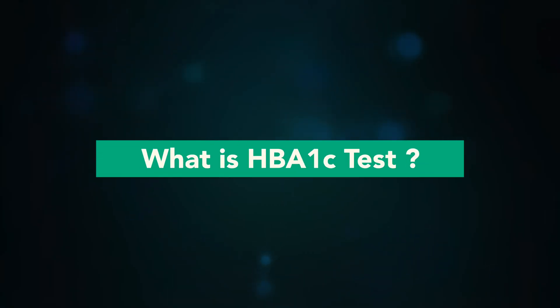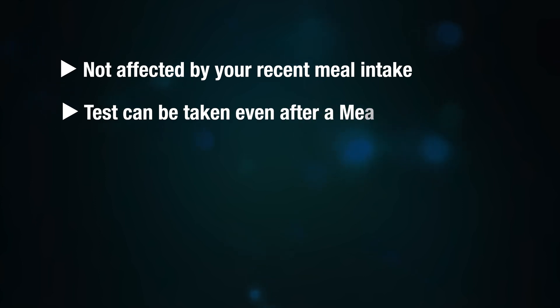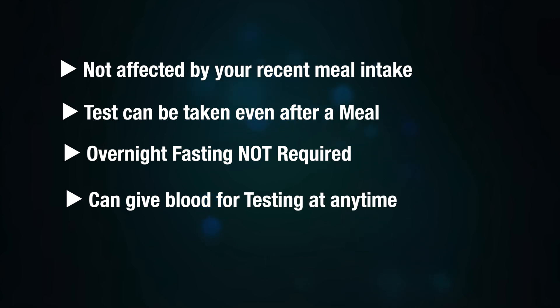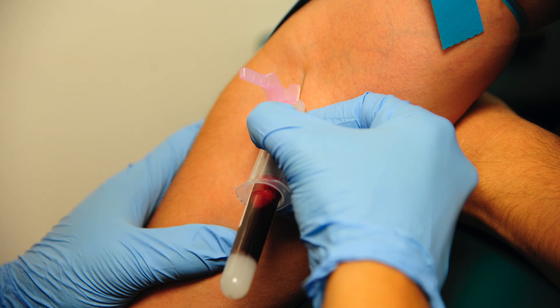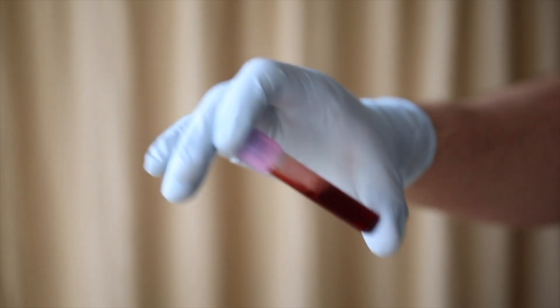What is the HbA1c blood test and what is the procedure? Before the test, this test is not affected by your recent meal intake — you can even take the test after a meal. There is no necessity to fast overnight, and blood can be given at any time of the day. Blood from the vein is collected in a purple-colored sample collection vial containing EDTA, which prevents clotting of blood in the tube.